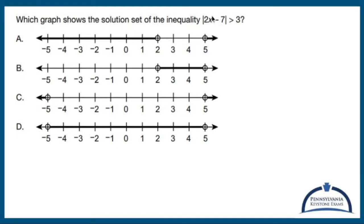Which graph shows the solution set of the inequality the absolute value of 2x minus 7 is greater than 3? Whenever you have an absolute value and a greater than symbol, two major things happen.